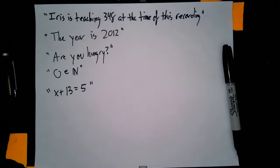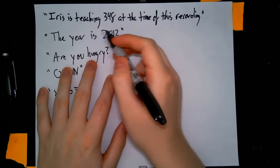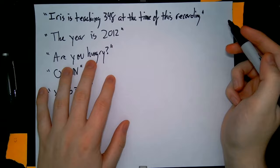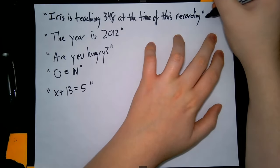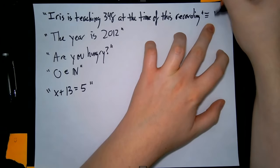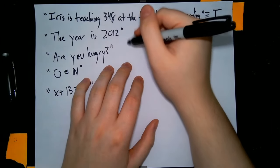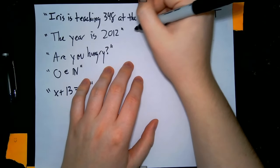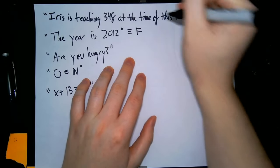Alright, so right here I have a few statements and we're going to see what their truth value is. "Iris is teaching 348 at the time of this recording." This is undoubtedly true because as I'm recording this, I am teaching 348. I'm talking about propositions, so we can say that this is true. "The year is 2012." As much as I wish it was, unfortunately the year is 2020. So I will say that this is a false statement.